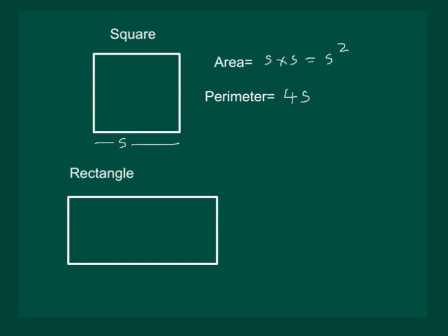Now, let us consider a rectangle. Suppose its length is L and its breadth is B. Then, its area is length into breadth and its perimeter is 2 times length plus breadth.